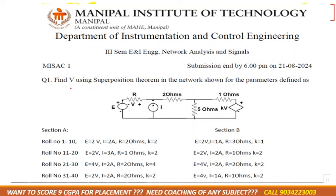This is your assignment. The task says: find voltage using superposition theorem in the network shown for the given parameters. We need to calculate the voltage as shown in the main diagram, using the superposition theorem. Do you remember what the steps for superposition theorem are?